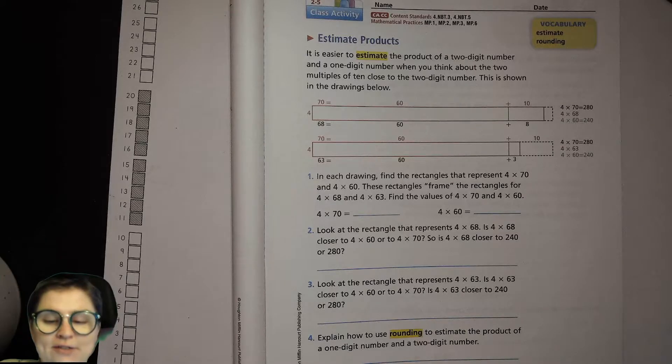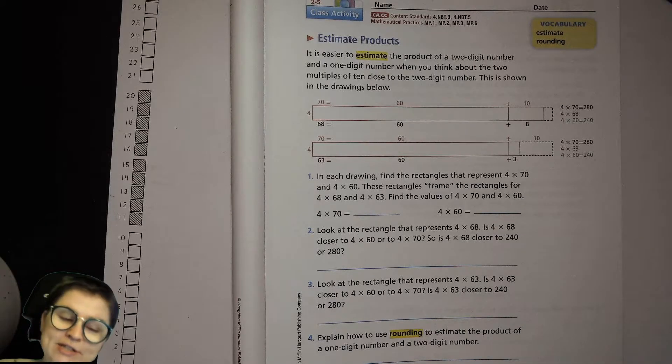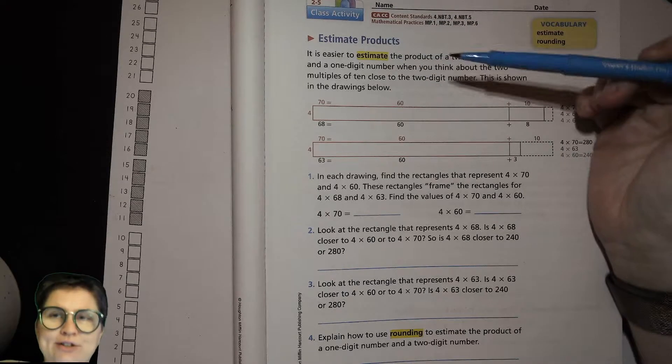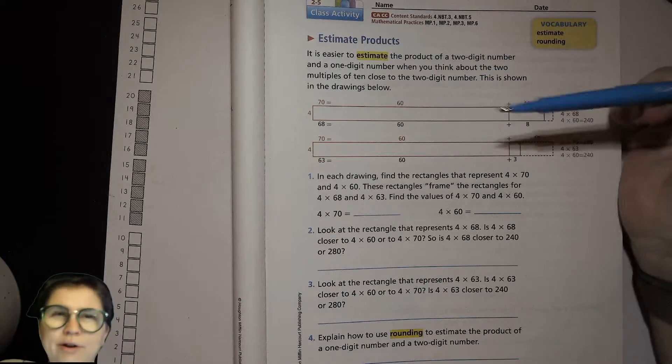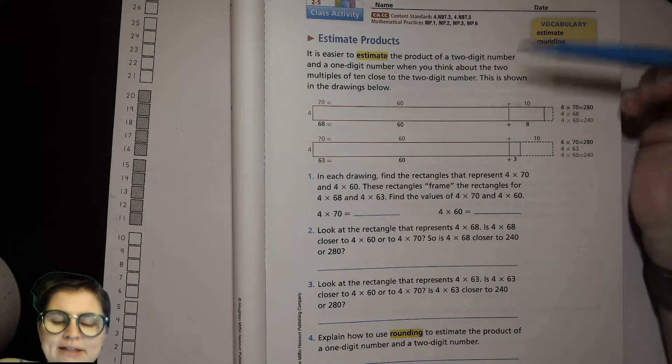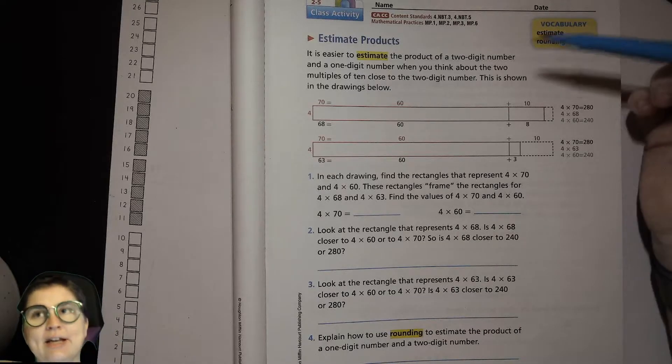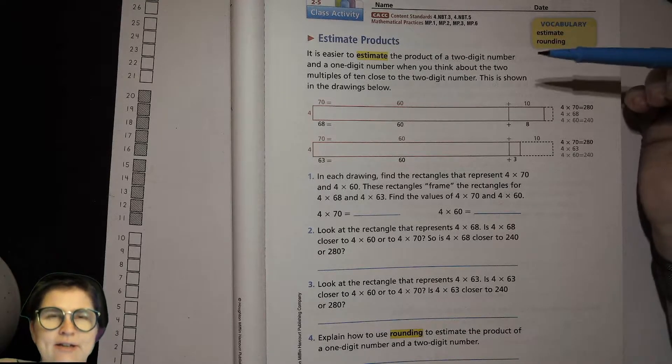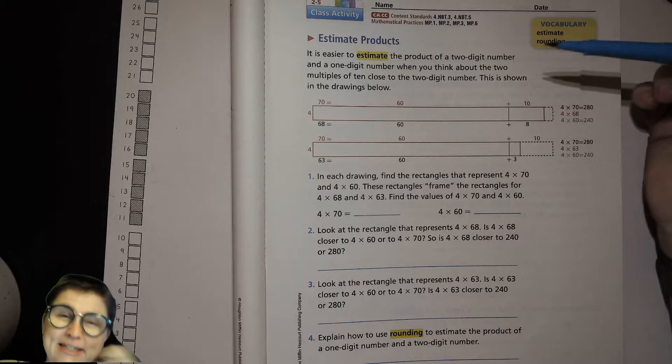The topic of the lesson and video today is about using estimation to give yourself an idea of where your answer probably should be. This is really important because it helps kids and adults quickly check their work and see, oh whoops, I totally forgot about the 100 or something, and identify mistakes easily without having to go through tons and tons of work.